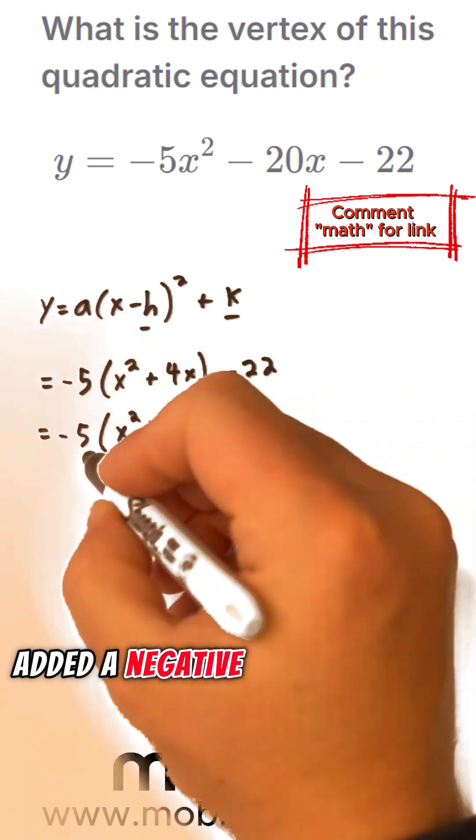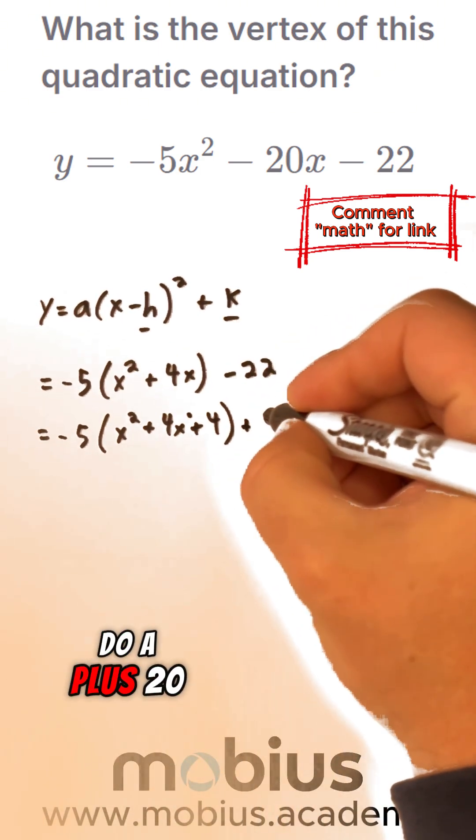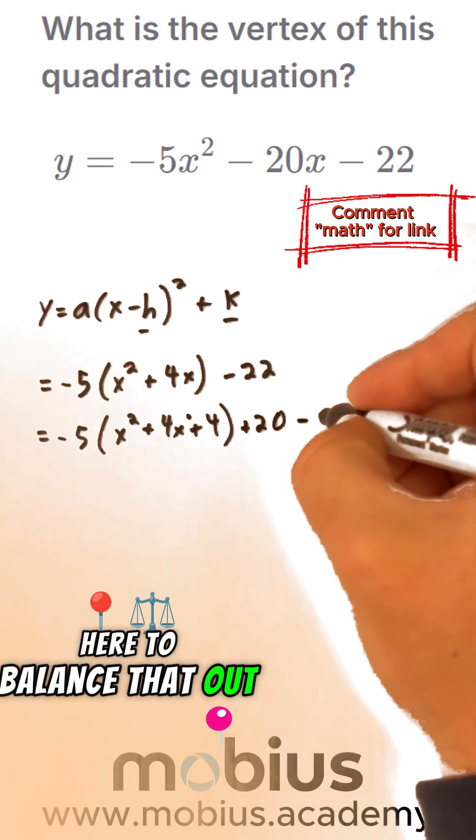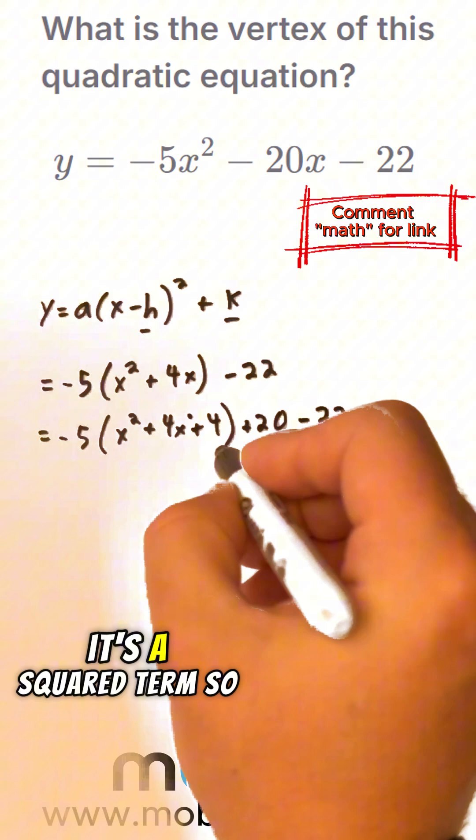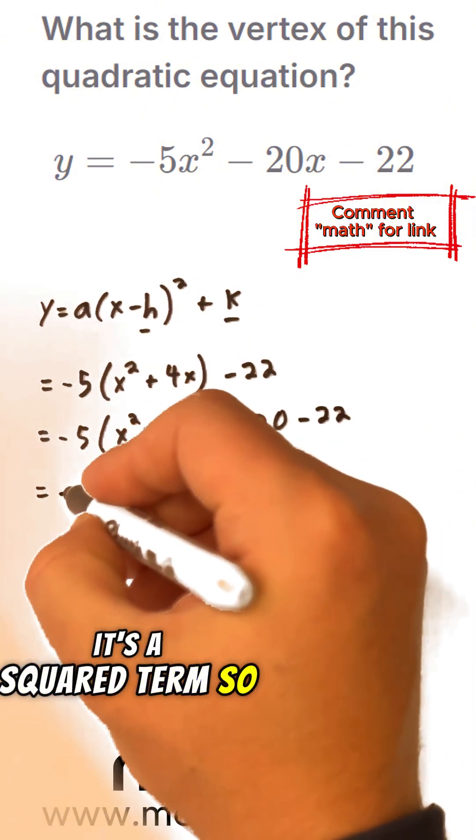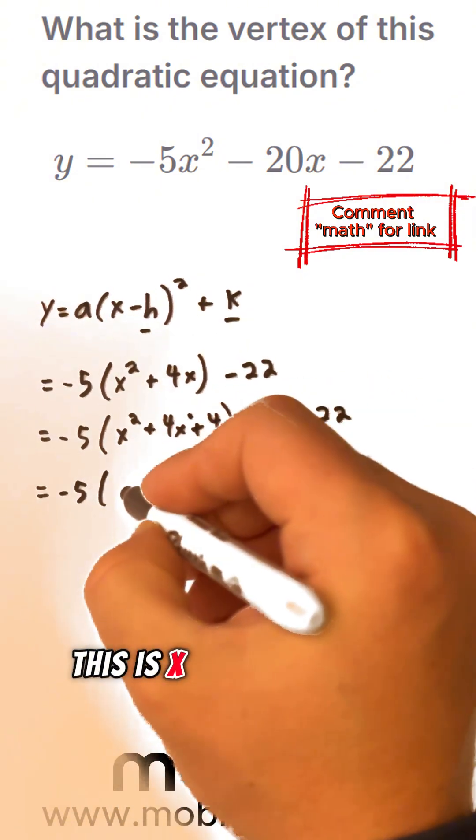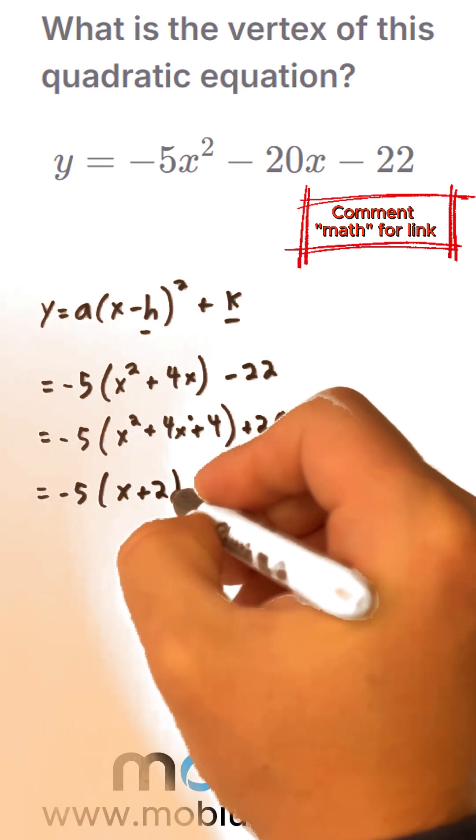Well, now we've actually added a negative 20. So I'm going to do a plus 20 here to balance that out, and our minus 22. And now if we look at this, it's a squared term. So negative 5, this is x plus 2, all squared.